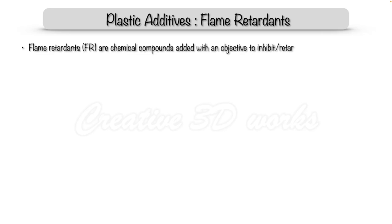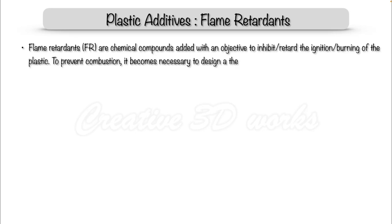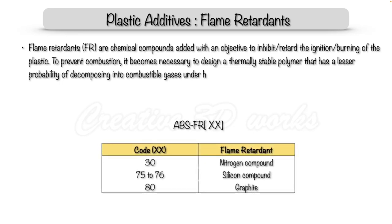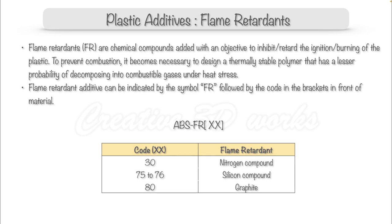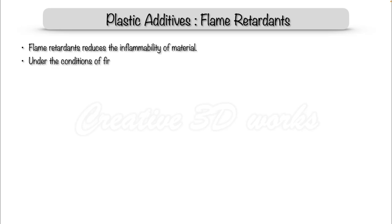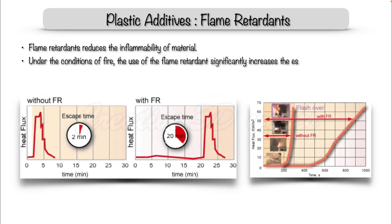Now let's see the flame retardants. Flame retardants are chemical compounds added with the objective to inhibit or retard the ignition or burning of plastic. To prevent combustion, it is necessary to design a thermally stable polymer that has a lesser probability of decomposing into combustible gases under heat stress. Flame retardant additives can be indicated by the symbol FR followed by a code in brackets in front of the material name. Code 30 is used for nitrogen compounds, 75-76 for silicon, and 80 for graphite. Flame retardants reduce the permeability of the material under fire conditions, significantly increase escape time, and prevent or retard fire growth and spread.